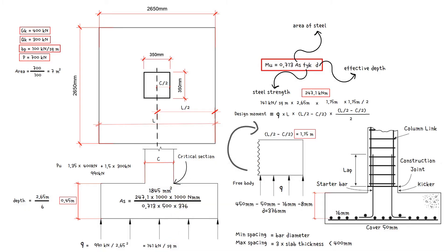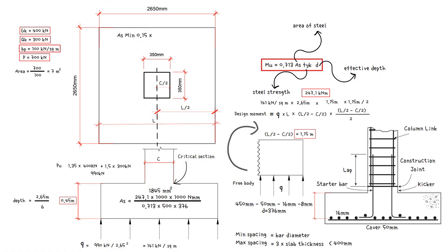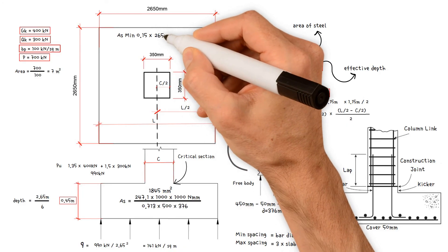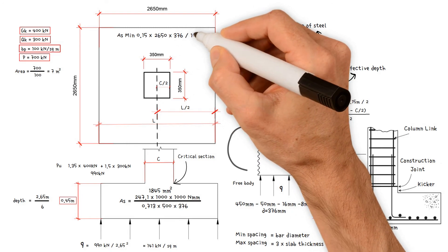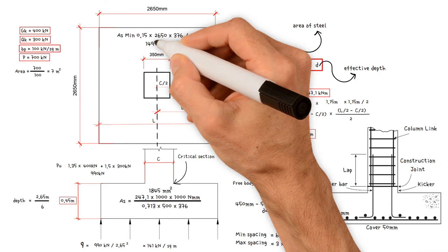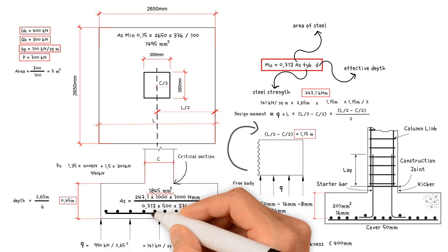The reinforcement should be greater than the minimum reinforcement required, 0.15 times foundation length 2.65 meters times 1000 times effective depth 376 millimeters divided by 100, which equals 1495 millimeters squared. The number of 16 millimeters bars equals area of steel 1845 millimeters divided by the area of rebar 201, which equals 9.2. Therefore, use 10 number 16 millimeters diameter high yield bars in both directions.